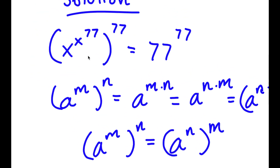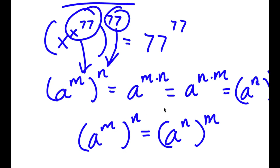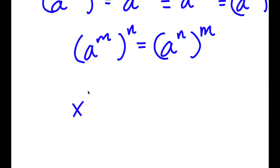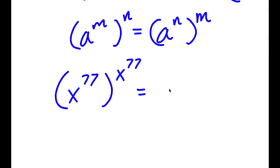So over here, we have x to the power of x to the power of 77, all to the power of 77. We can think of x to the power of 77 as m and 77 as n. Switching those two places, I now have x to the power of 77 to the power of x to the power of 77, equal to 77 to the power of 77.